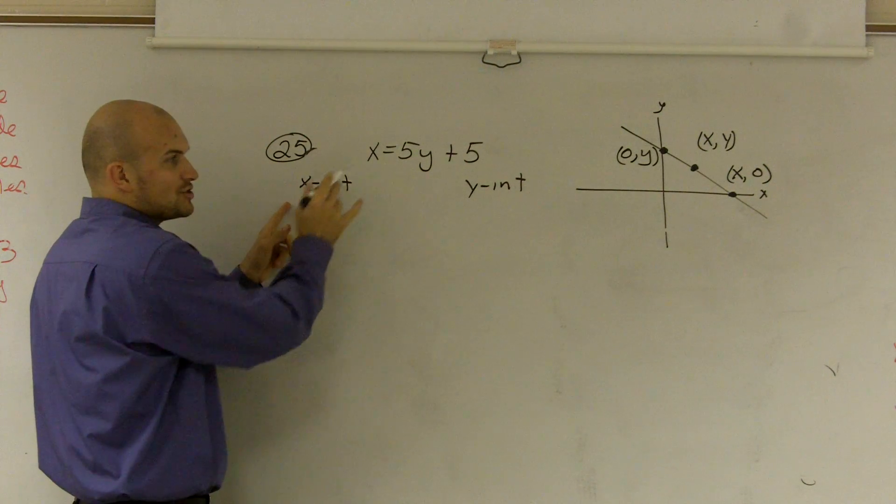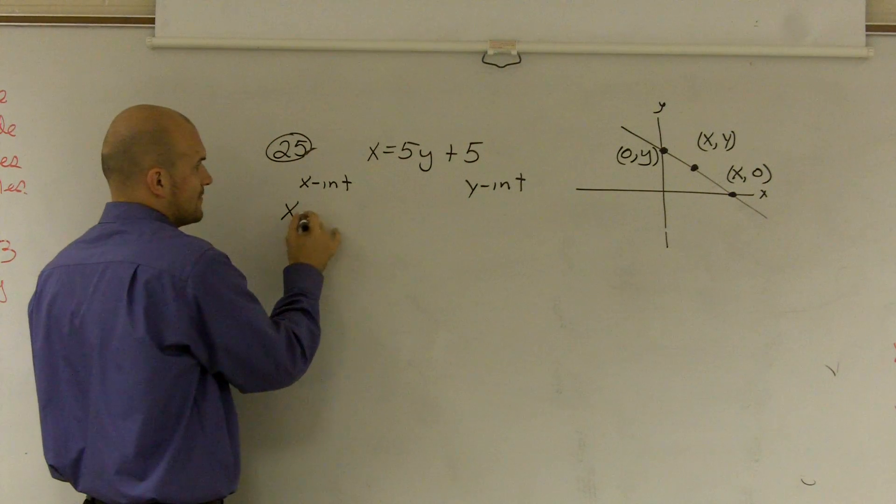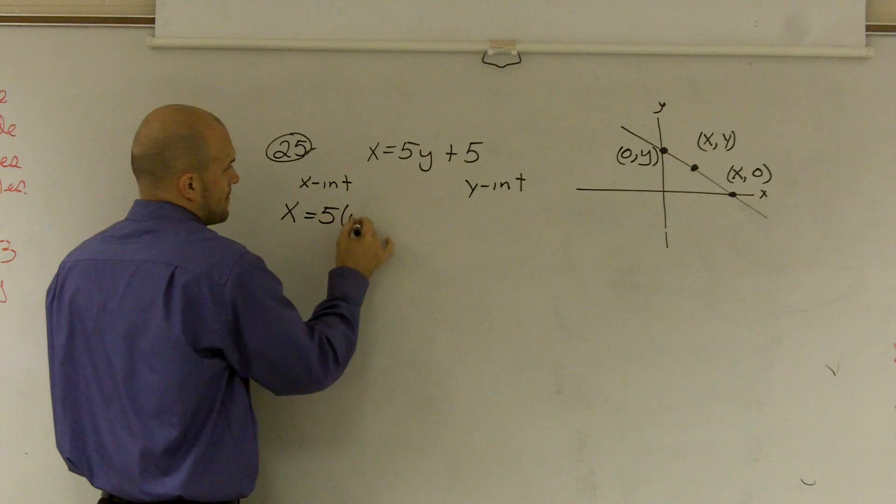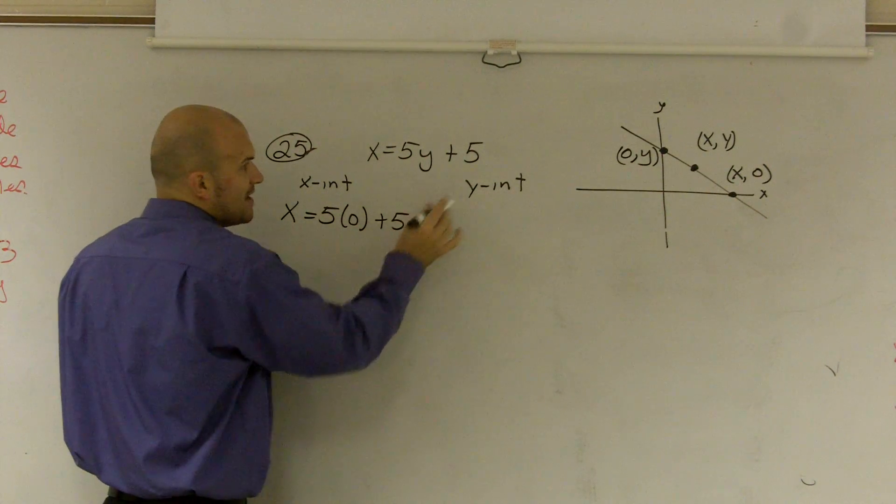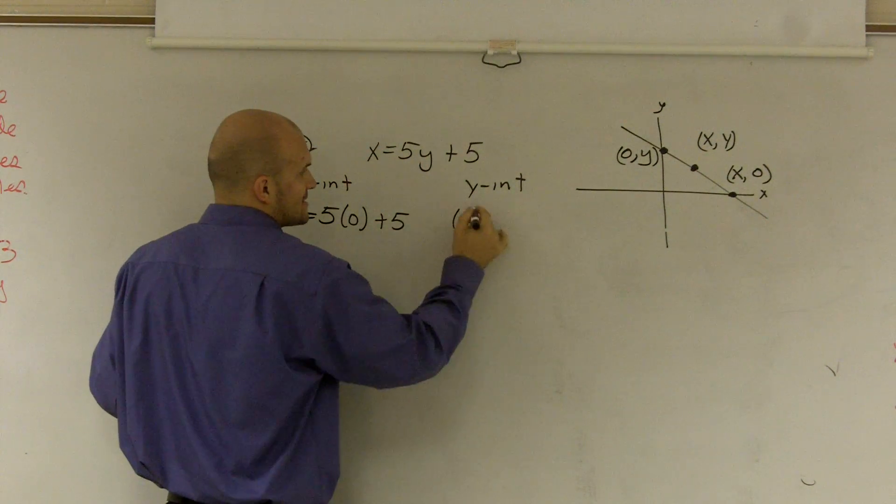For the x-intercept, I should see a zero in for the y. Then for the y-intercept, I should see a zero in for the x.